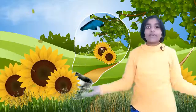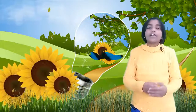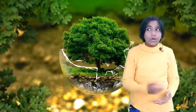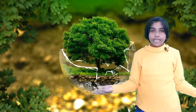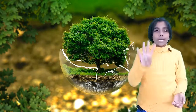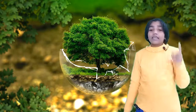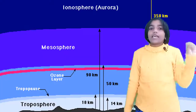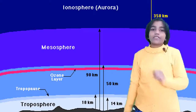The thick layer of air that surrounds the earth is called atmosphere. Friends, do you know how many types of layers are there in atmosphere? There are four types of layers. They are troposphere, stratosphere, ionosphere and exosphere.